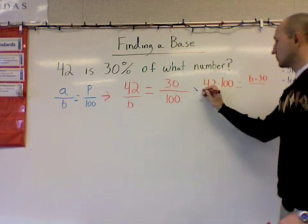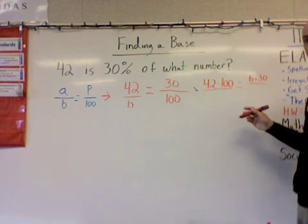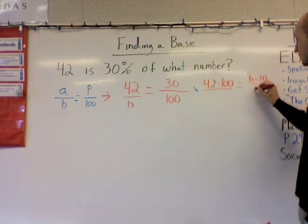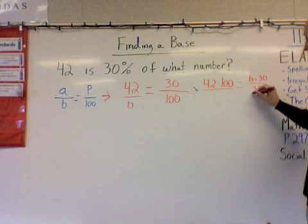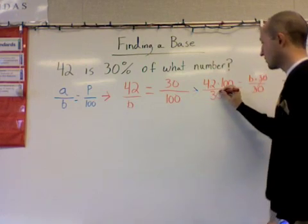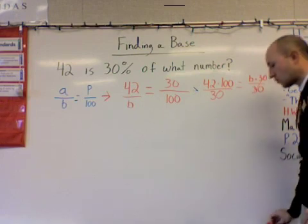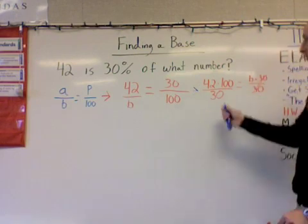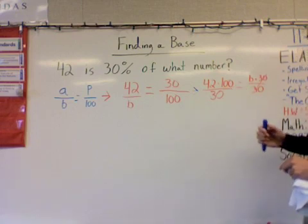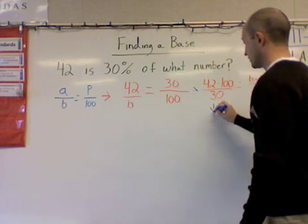Now what I want to do in regards to the division is get the B by itself. So in order to get the B by itself, I need to divide by 30. That'll go away. And now I also want to divide by 30 here. Let's take it one step at a time. Remember, I need to do the top first. 42 times 100, I'll just bring it down this way, will equal 4,200.